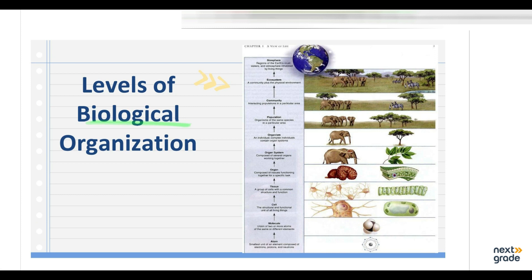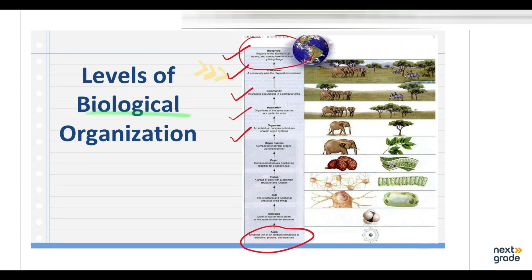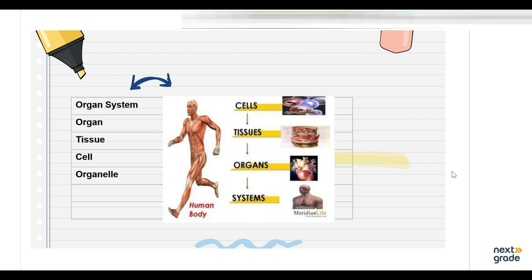As you can see in the picture, the levels of biological organization go from the smallest to the highest: atoms, molecular, cellular, tissue, organ, organism, population, community, ecosystem, and biosphere. We are already done with the biosphere, ecosystem, community, population, and organism levels. If you need to revise, you can go back and watch the previous video, then come and join us to continue with the remaining levels.